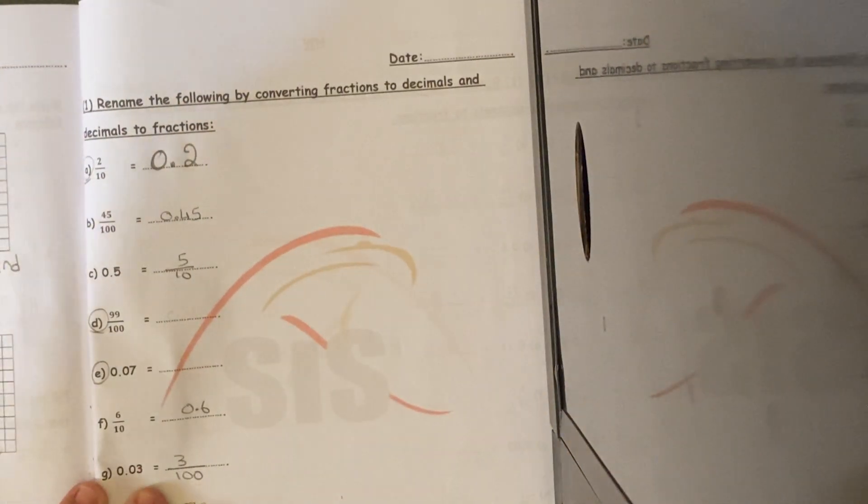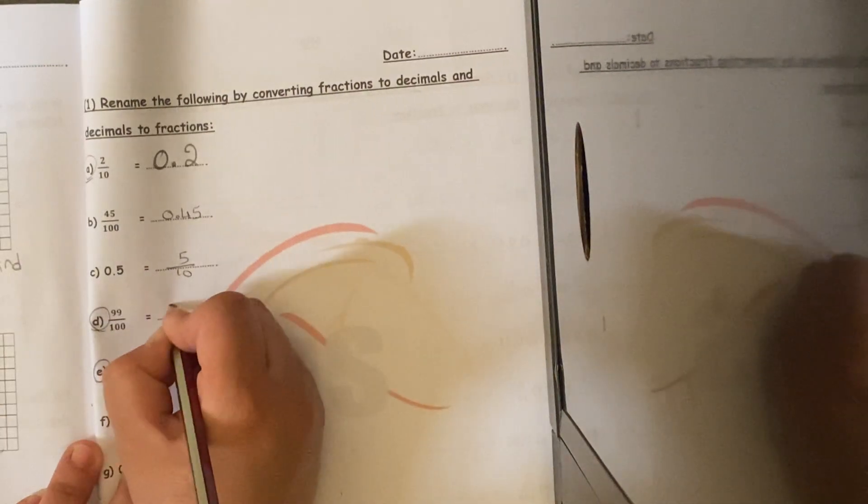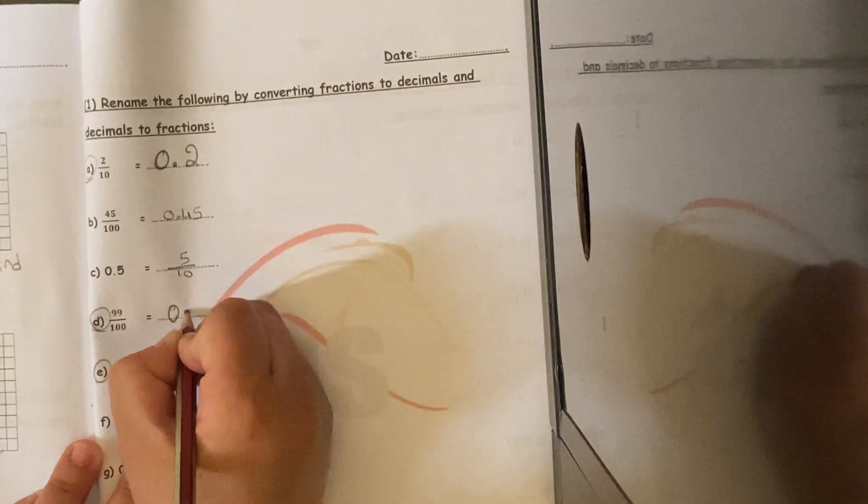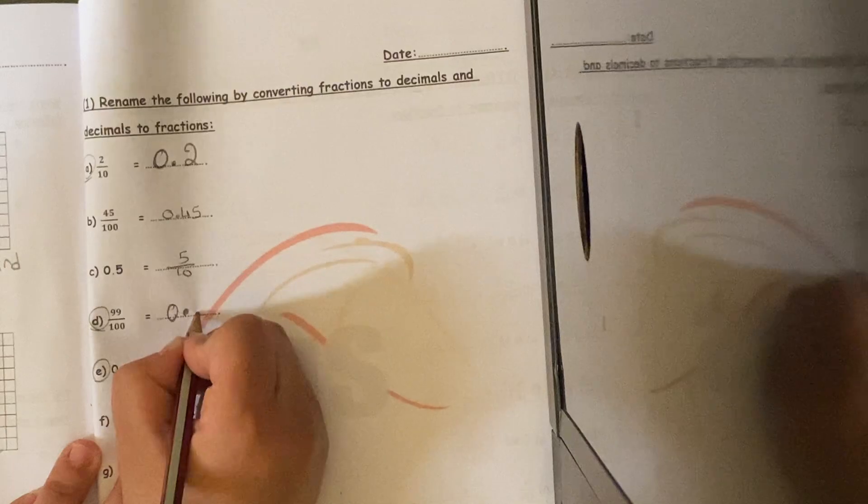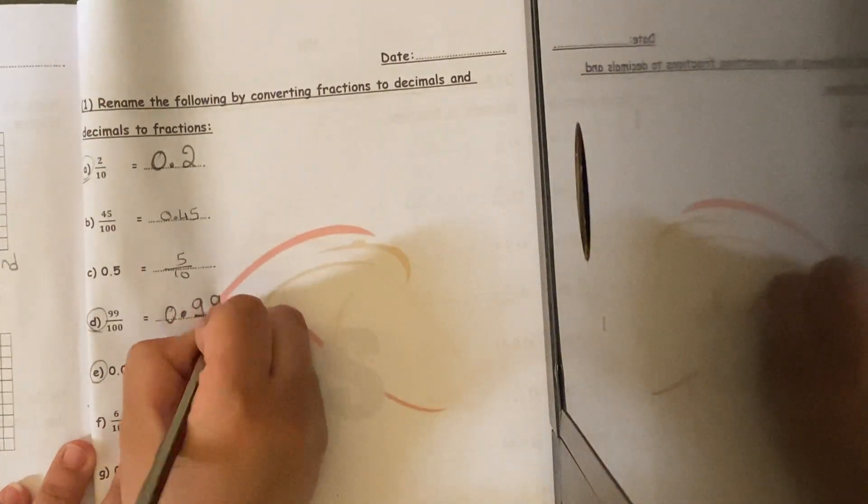Letter D, I have 99 over 100. I don't have any whole number, so I put 0. After the whole number comes the decimal point. How many chairs? 2 because I'm over 100, and then I'm going to write 99.